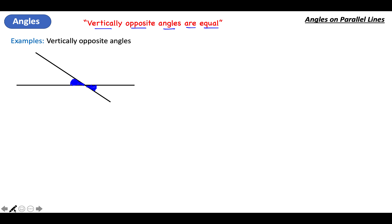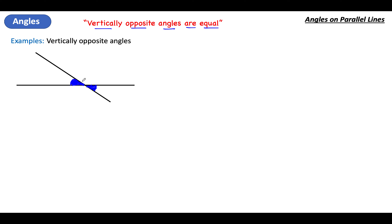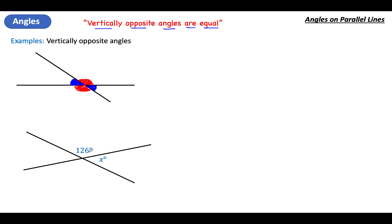Keywords: vertically opposite angles are equal. You have to get those words in to get the marks. Also, this angle here will also be the same as its opposite angle. We call them vertically opposite angles and they are equal. So if I was doing a question on this — I've got one angle and it asks me to find the size of angles x and y, giving reasons — I'm going to do x first.